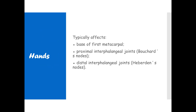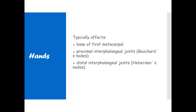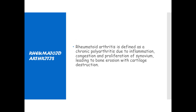On the hands, osteoarthritis typically affects the base of the first metacarpal, proximal interphalangeal joints — called Bouchard's nodes — and distal interphalangeal joints — called Heberden's nodes. Take note: the PIP joints, the base of the first metacarpophalangeal joint, and the distal interphalangeal joints are commonly affected. That concludes osteoarthritis; let's move on to rheumatoid arthritis.